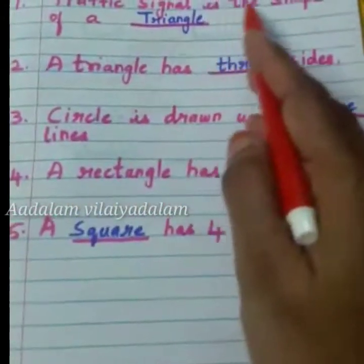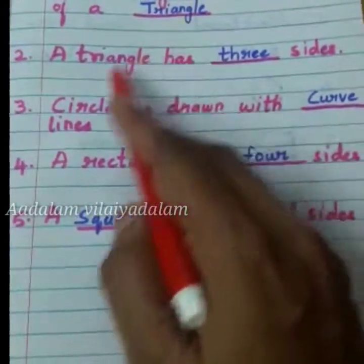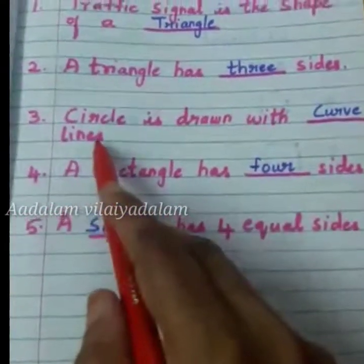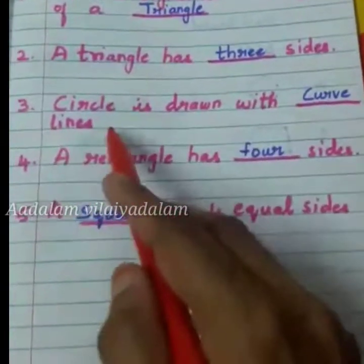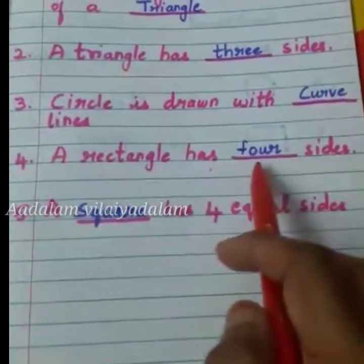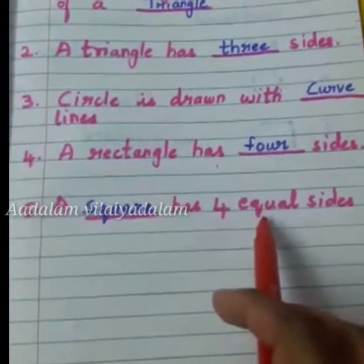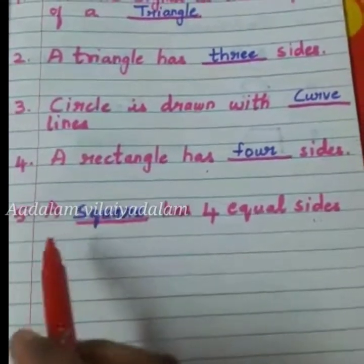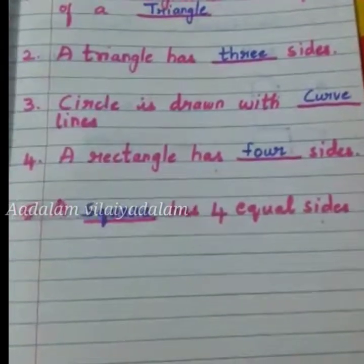A traffic signal is the shape of a triangle. A triangle has how many sides? Three sides. A circle is drawn with a curved line. A rectangle has four sides. A square has four equal sides.